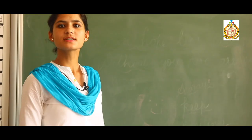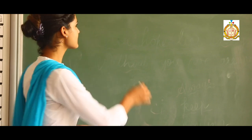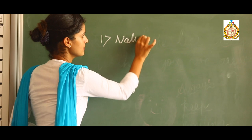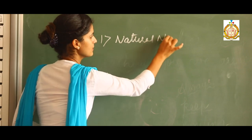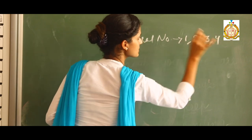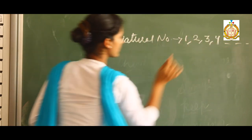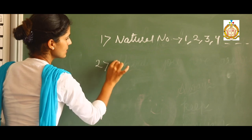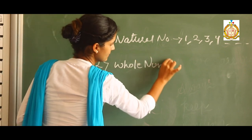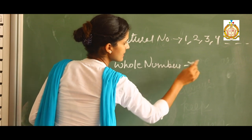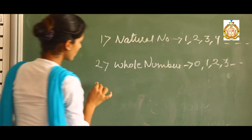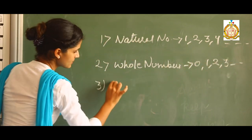We have already discussed: first, natural numbers, which start from one — one, two, three, four and so on. Second, whole numbers, which start from zero onwards — zero plus natural numbers. And now the third part is rational numbers.